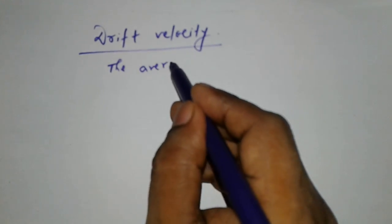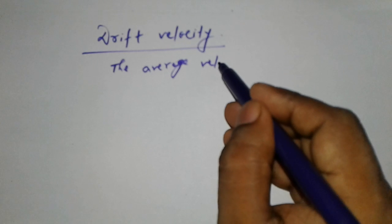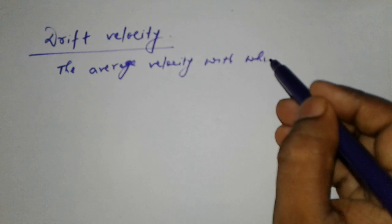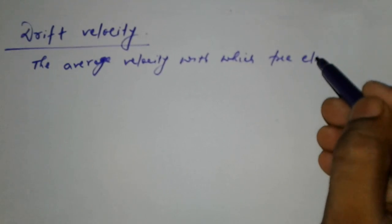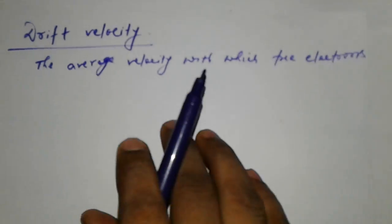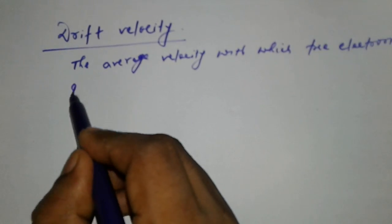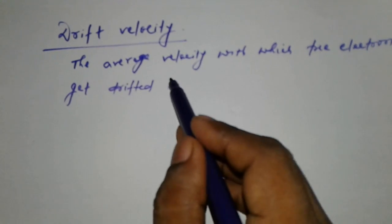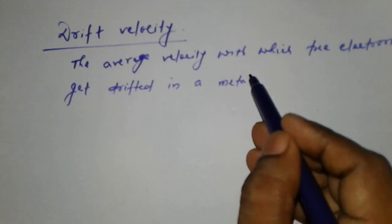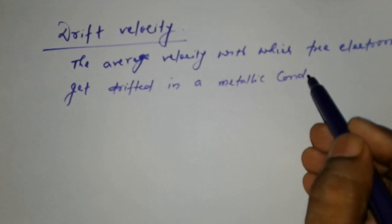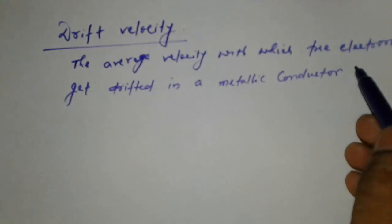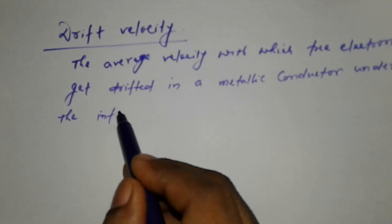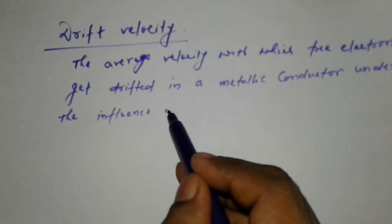The average velocity with which free electrons get drifted in a metallic conductor under the influence of electric field.